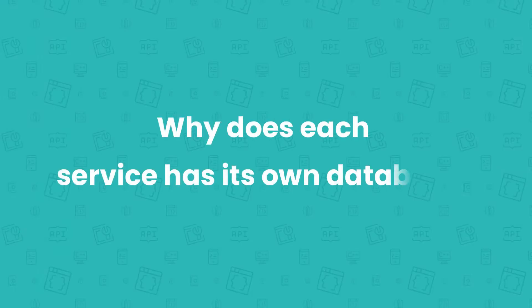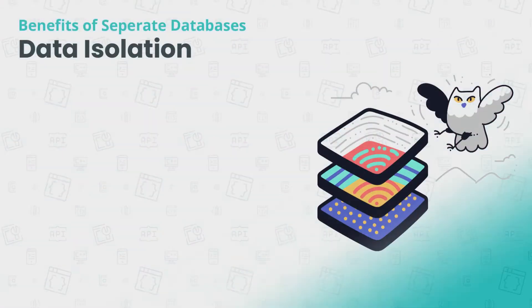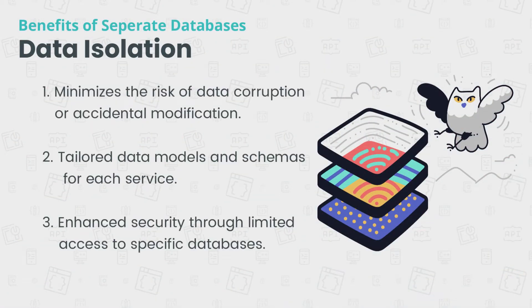Before we get to the hands-on portion of this video, let's first find out why it's a best practice that each service in a modern system architecture has its own database. First, data isolation. Each service has its own unique set of data and requirements. By separating databases, we ensure that the data of one service remains isolated from others. This isolation provides several benefits.